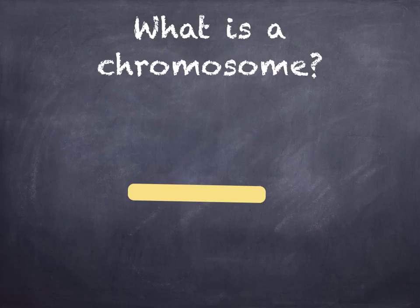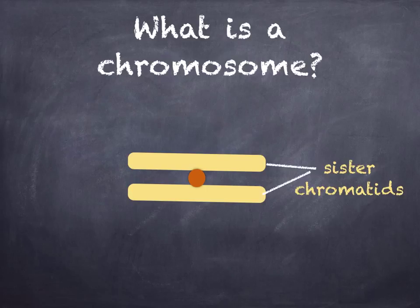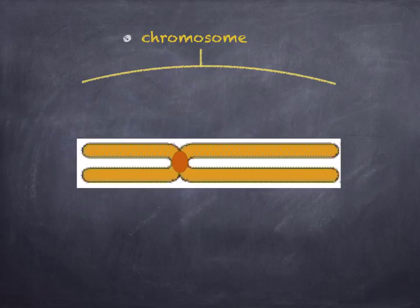Just to recap: a chromosome gets replicated during interphase, so that you've got two sister chromatids that are joined by a centromere. The sister chromatids are identical to one another. Here's a simplified diagram of a chromosome with the two sister chromatids. Your gene is the length of DNA that determines a single characteristic, represented by that little blue line. It codes for particular polypeptides used to make up the enzymes needed in the biochemical pathway leading to the characteristic.